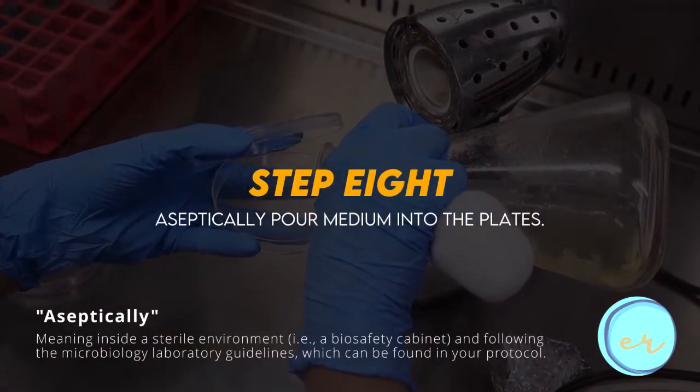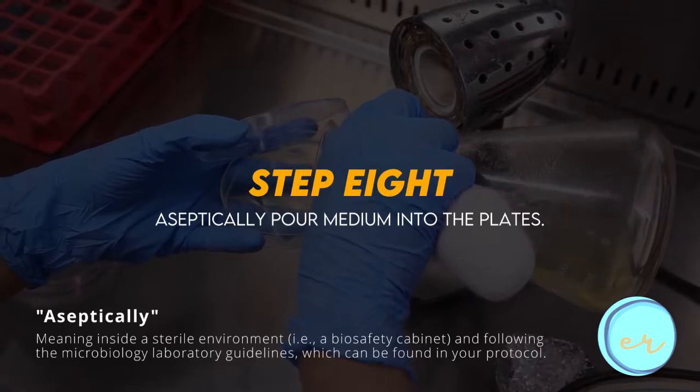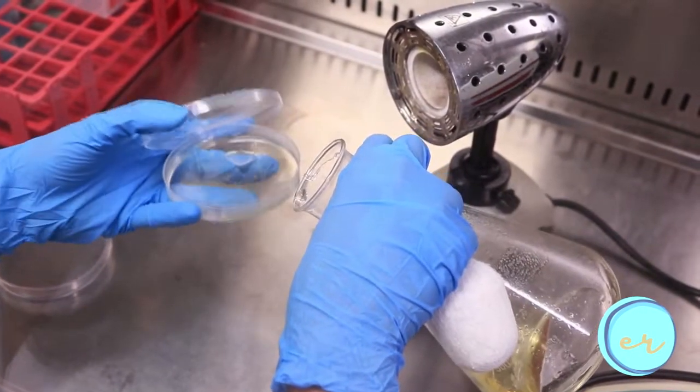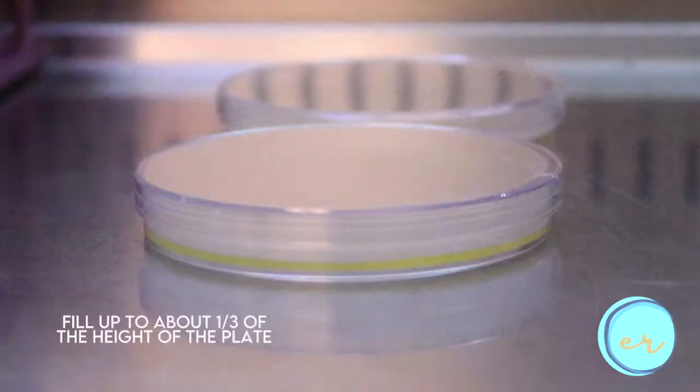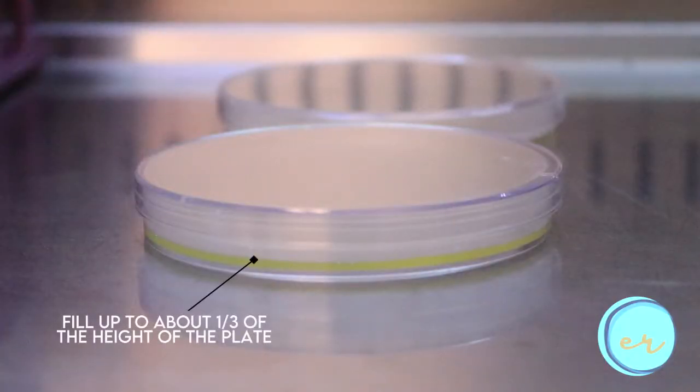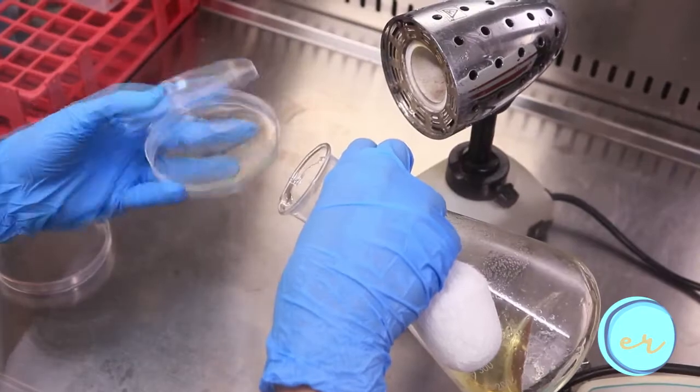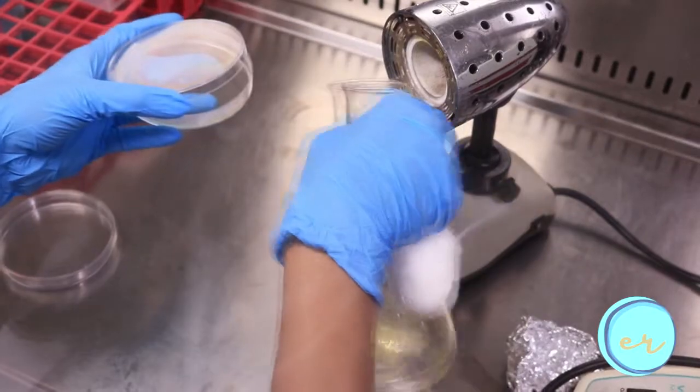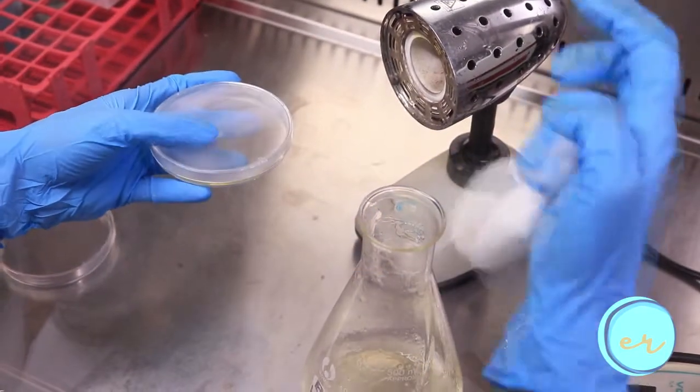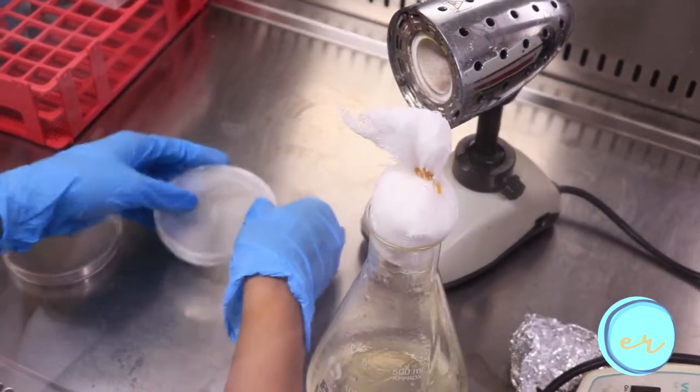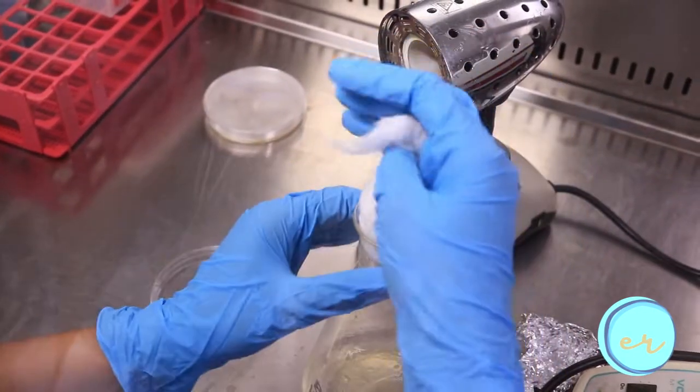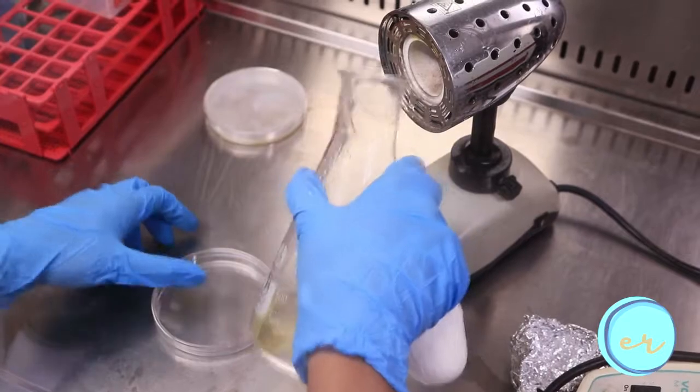Now, aseptically pour the sterile medium into the petri plates. When pouring agar into the plates, do not fill them up to the brim. Instead, only fill about one-third of the height of the petri plate. While pouring, gently tilt from side to side or move the plate in a back and forth right and left direction to distribute the agar uniformly over the bottom. Be careful not to let the medium come into contact with the cover.